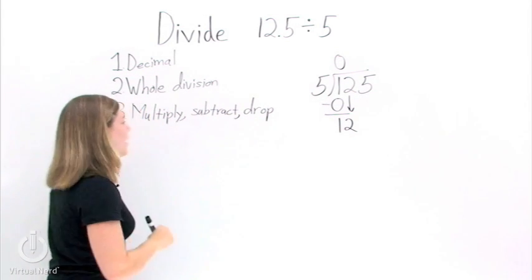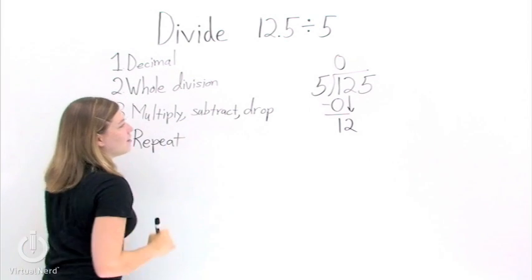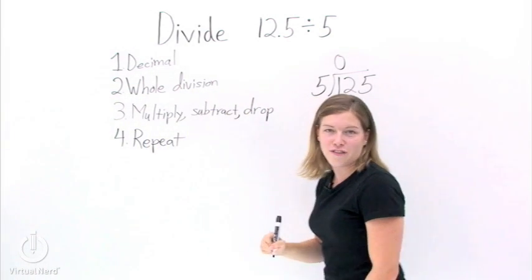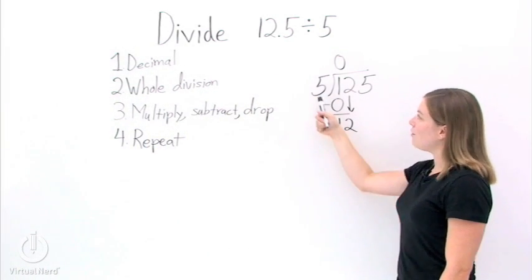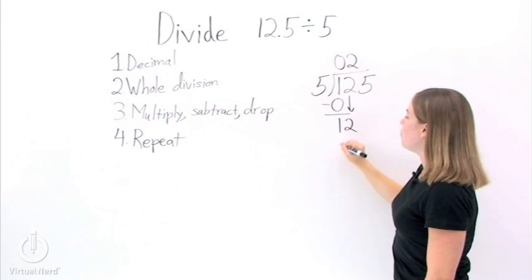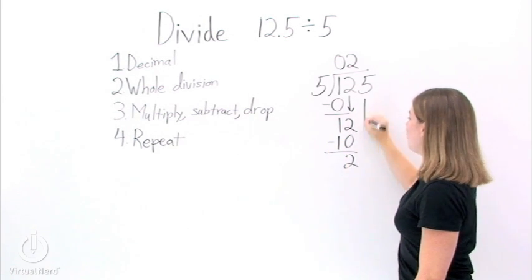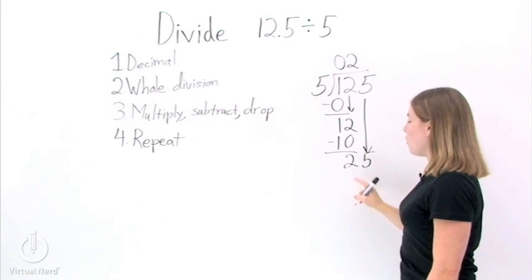Now we're ready for the next step. Step number 4, repeat this process until you have no digits left in your dividend. So we take 12 divided by 5. That occurs wholly twice. Take 2 times 5, we get 10. Subtract it, we get 2. Bring down 5, we have 25.